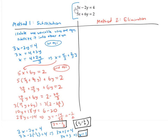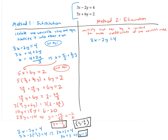Now let's solve the same system using a different method — the method of elimination. The key idea is to multiply each equation by a constant to make the coefficients of one variable match. Say I'm trying to make the coefficient of x match. One way is to multiply the first equation by five and the second equation by three, so the coefficient of x will be 15 for both equations.